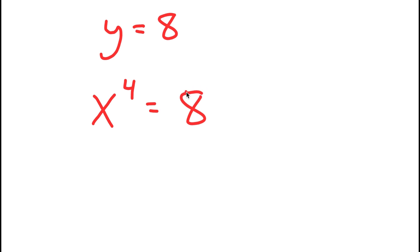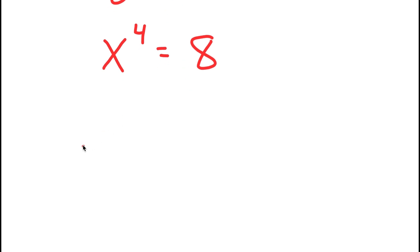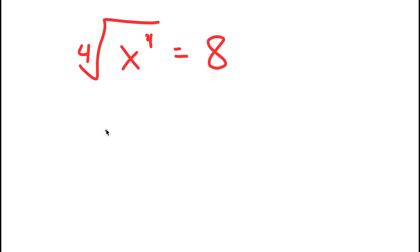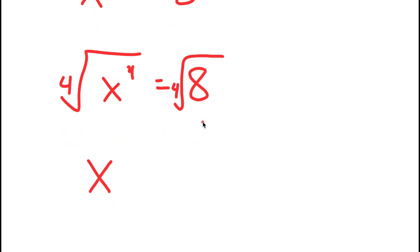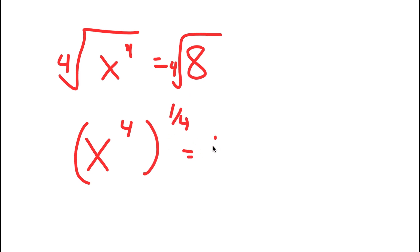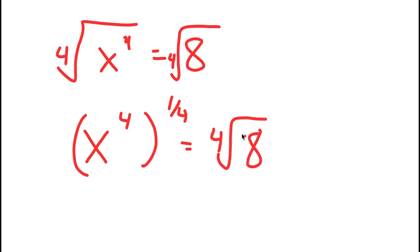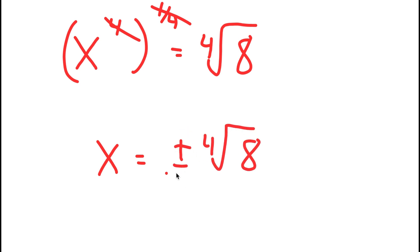To solve this, I'm going to take the 4th root — which is the same thing as the power of 1 over 4 — on both sides. So I have the 4th root of x to the power of 4 is equal to the 4th root of 8, which is the same as x to the power of 4 to the power of 1 over 4 equals the 4th root of 8. These two cancel out, so I get x is equal to positive or negative the 4th root of 8 — and remember to include the negative because this is an even exponent.